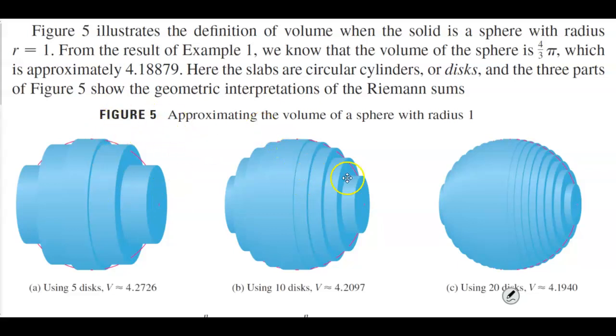Now if we take a look at Figure 5 here, it's going to illustrate the definition of volume when the solid is a sphere with radius r equal to 1.